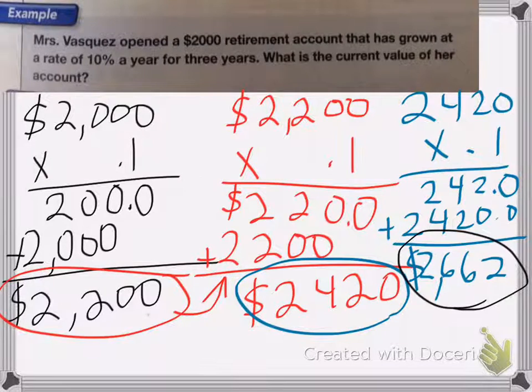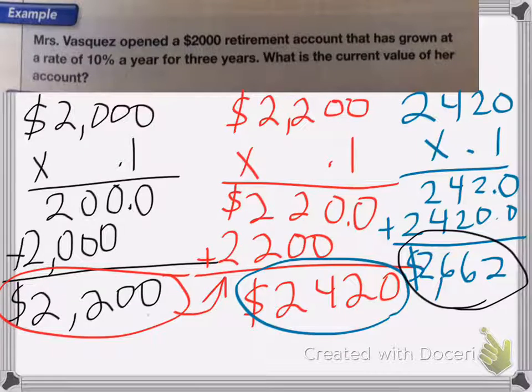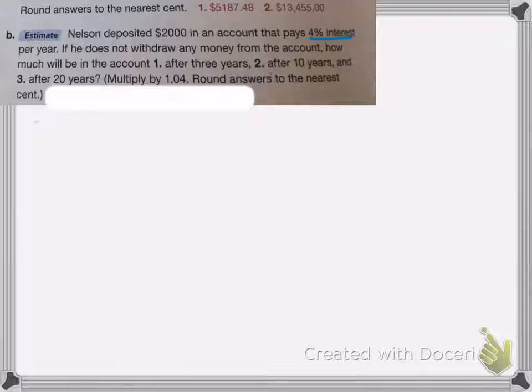Okay. Now there is another way to do it that takes out this extra addition step. And I'm going to show you that here. So Nelson deposited $2,000 in account and it pays 4% interest per year. If he doesn't draw any money out of the account, how much will be in the account after three years? So we're just going to do this first one. So three years.